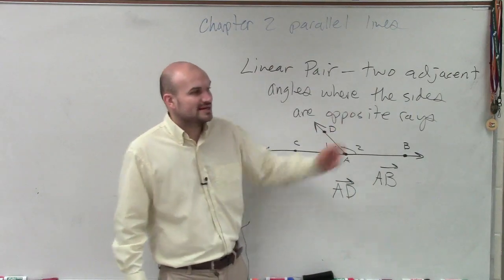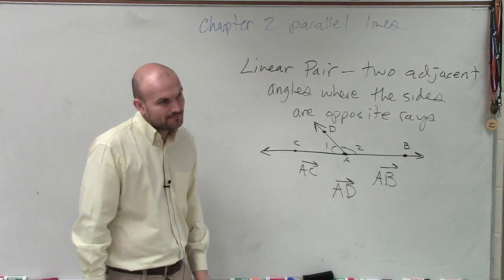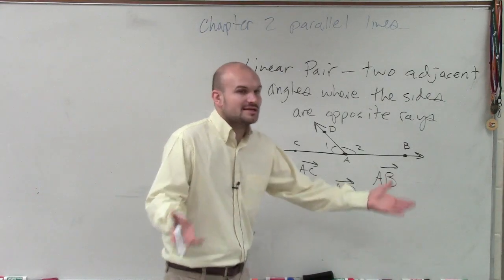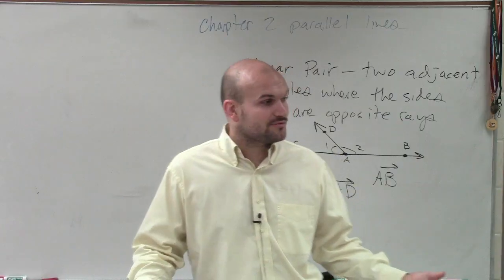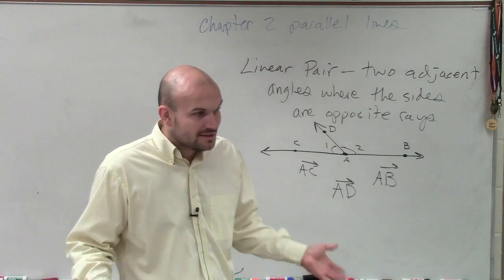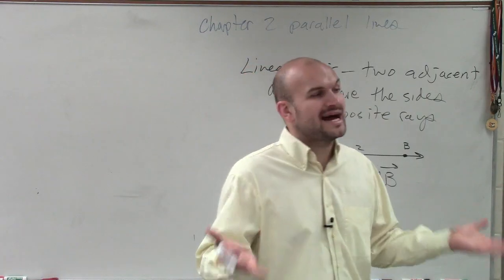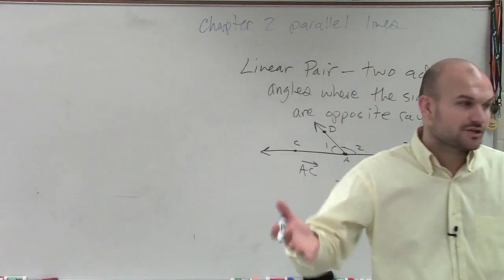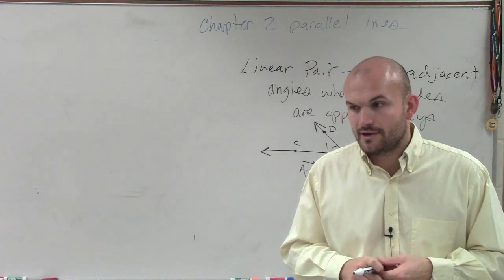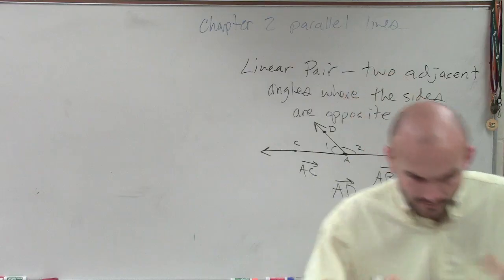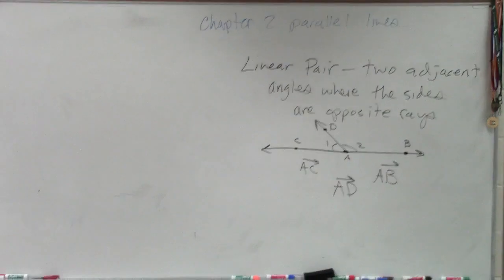So therefore, this would be an example of a linear pair. If you have adjacent angles that don't add up to form a line, they are not a linear pair. A linear pair tells you that you have adjacent angles that form a line.